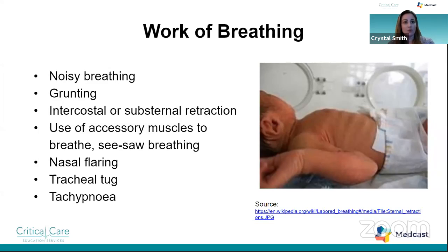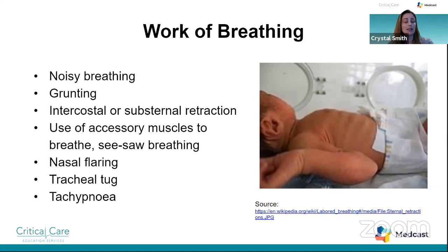Intercostal or substernal retractions are another key sign. Depending on the child's age, their ribs may or may not normally be visible. In infants covered in a layer of baby fat, being able to see all their ribs indicates significant intercostal recession — they're putting in a lot of effort for every breath. If we can also see clear delineation between subcostal ribs and the abdomen, they're using abdominal muscles to breathe, indicating increased work of breathing. This can be easier to see on older children, but intercostal recession is always very concerning.